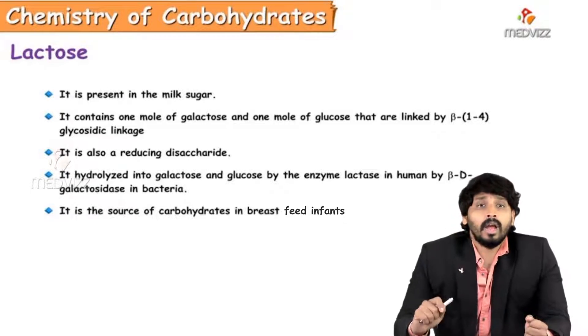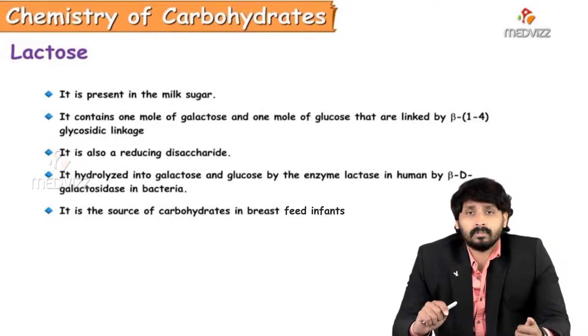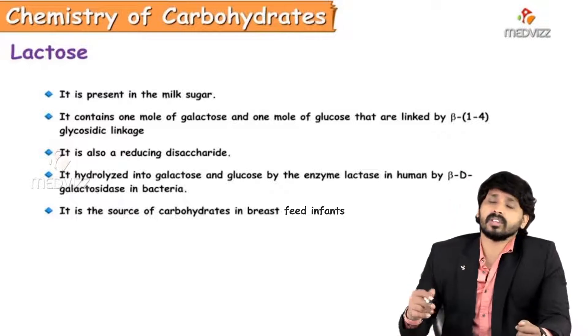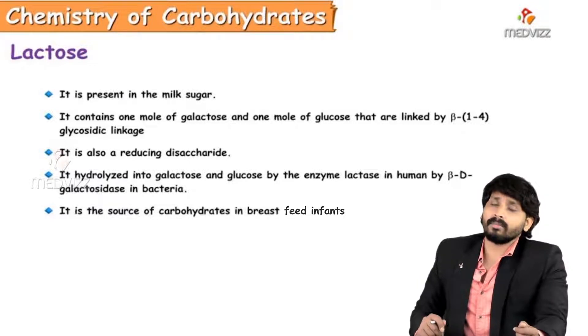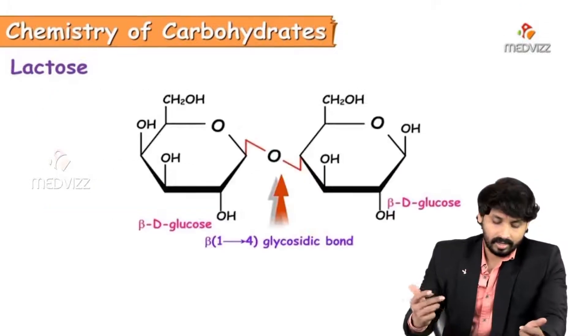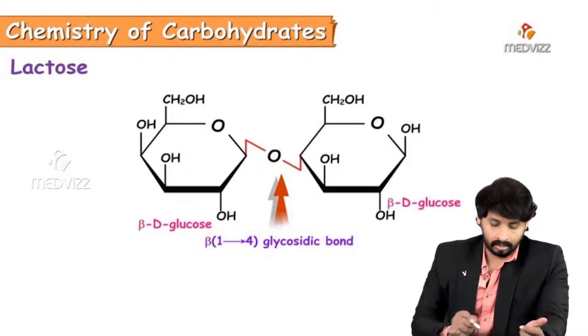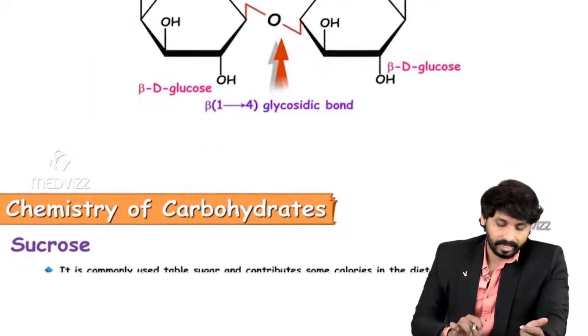And it hydrolyzed to free galactose and free glucose in the intestine by the enzyme lactase and sometimes by beta D galactosidase in bacteria. It is a source of carbohydrates in breastfeed infants. In the slides you can see here the orientation of galactose here, beta form.